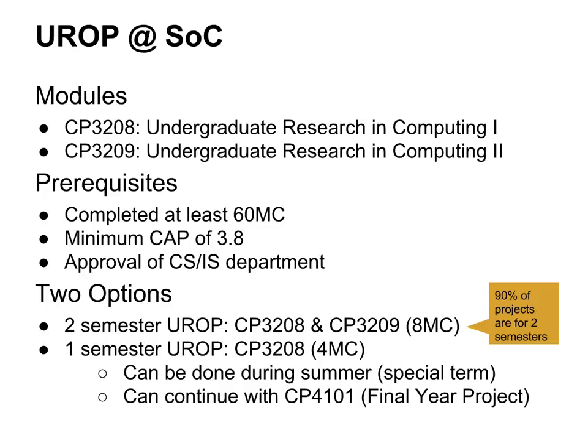There are two options: you can either do a two-semester UROP, which about 90% of our UROPs are, or you can do a one-semester UROP. If you have friends thinking of starting in January but don't have enough time to do a full year, they can take half a year, and usually that means doing something more in addition to make up time — either additional parts of UROP during the summer formally, or continuing it with a final year project. Any questions so far?